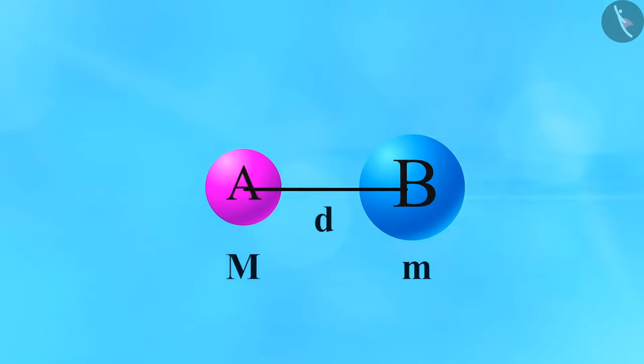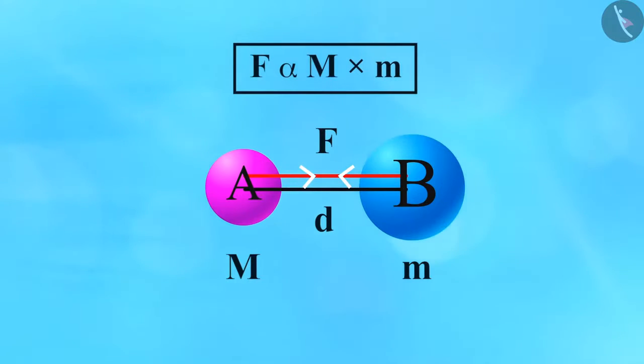According to the universal law of gravitation, the force between the objects is directly proportional to the product of their masses. So mathematically we can write it as F directly proportional to M multiplied by m.